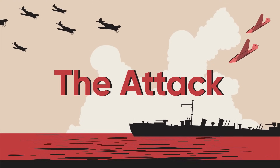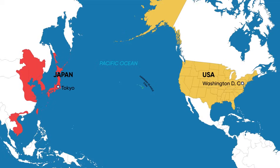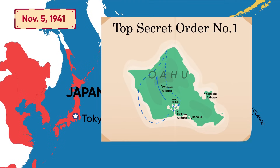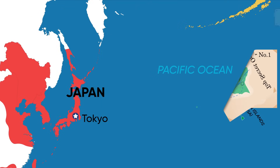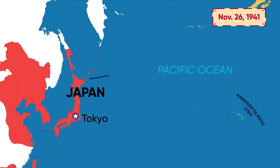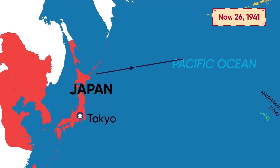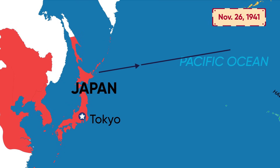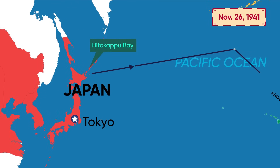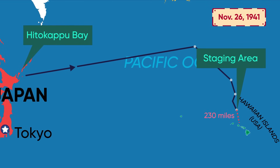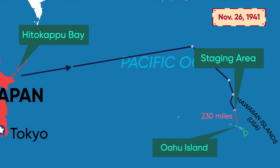On November 5, 1941, Top Secret Order No. 1 was issued to the Japanese Combined Fleet, detailing the plan for the attack on Pearl Harbor. On November 26, the Japanese Attack Force, including 6 aircraft carriers, 2 battleships, 3 cruisers, and 11 destroyers, sailed from Hitokapu Bay in the Kuril Islands to a staging area some 230 miles off the Hawaiian island of Oahu.